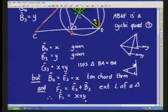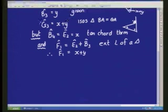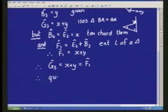So we might have got a little bit lost. So we need to pull it all together and show the examiner what we're talking about. So now we're going to say, therefore, G3 is X plus Y is equal to F1. And therefore, my quad is cyclic.